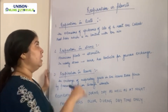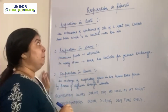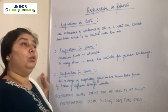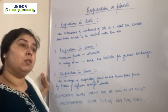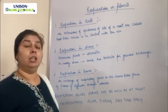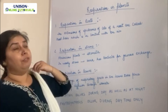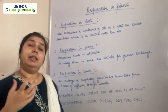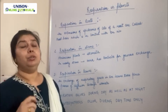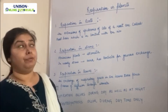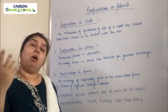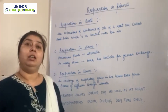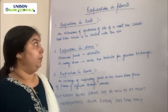First, we are going to look at respiration in roots. Roots are in contact with the soil. Soil particles have air between their pores. The roots take up that air through the process of diffusion, and then the oxygen gets transported to each and every cell of the plant.